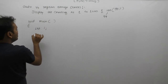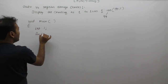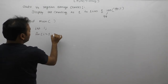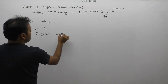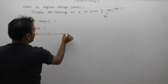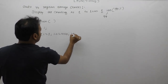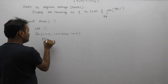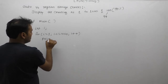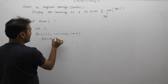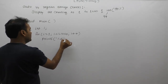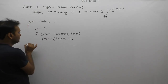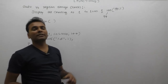Declare an integer i, start the loop from i equals one, up to i less than or equal to one thousand, then i plus plus. Inside the loop, display the value of i. This is the code written by 99 out of 100 students, and in this case the output will be perfectly correct.